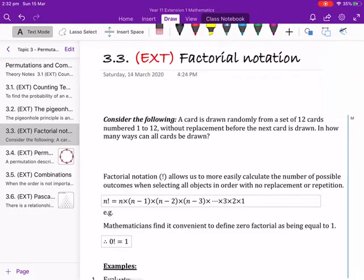Hi everyone, today we're going to learn about factorial notation. Last lesson we learned about the pigeonhole principle. Counting outcomes when repetition or replacement is allowed is straightforward, even when the numbers become very large. When there is no repetition or replacement, the calculations can be long.